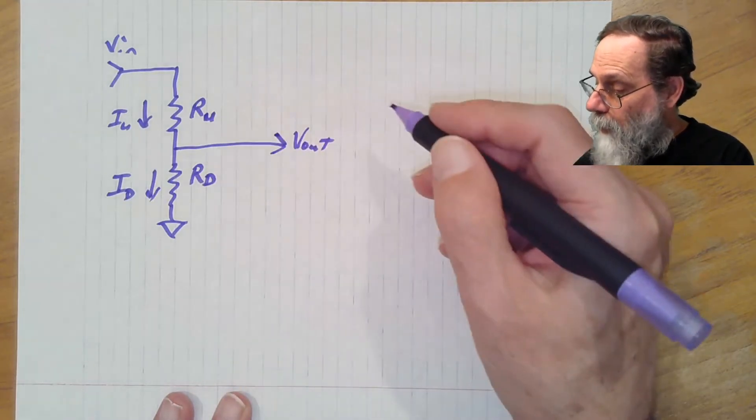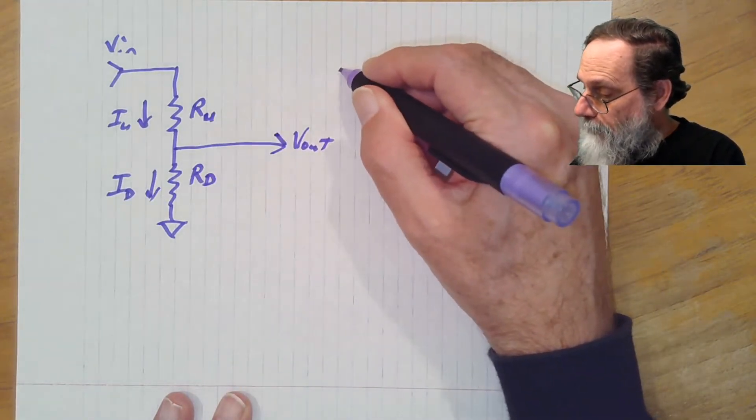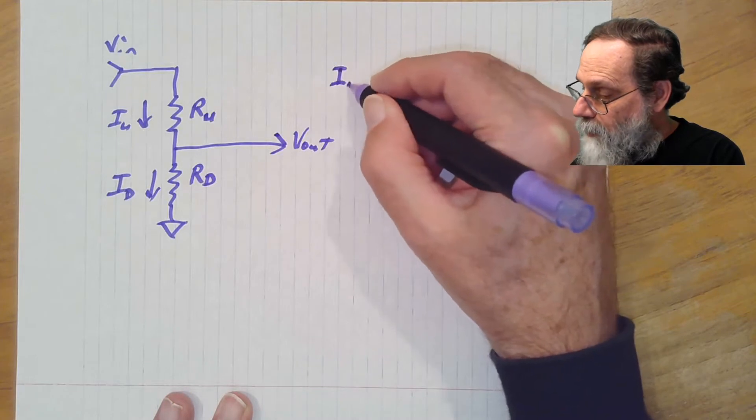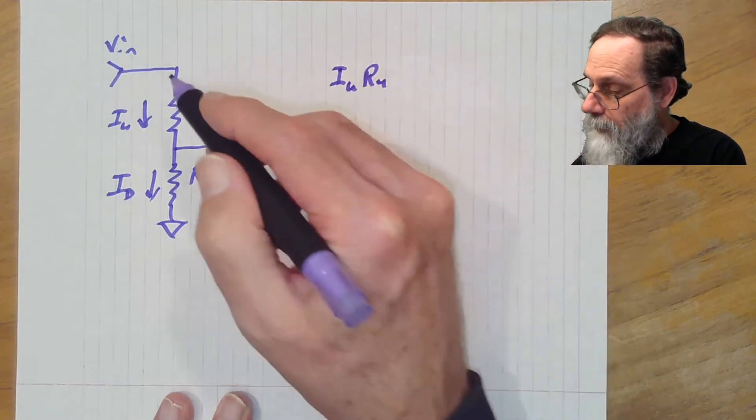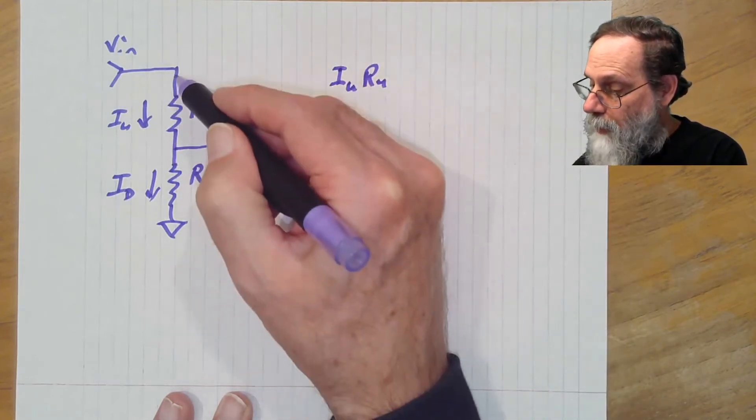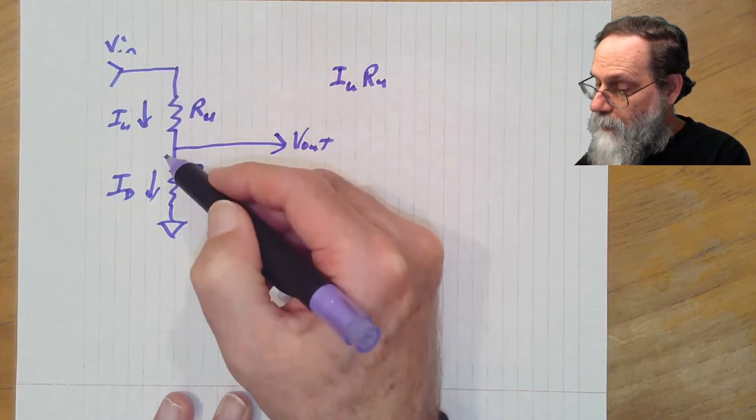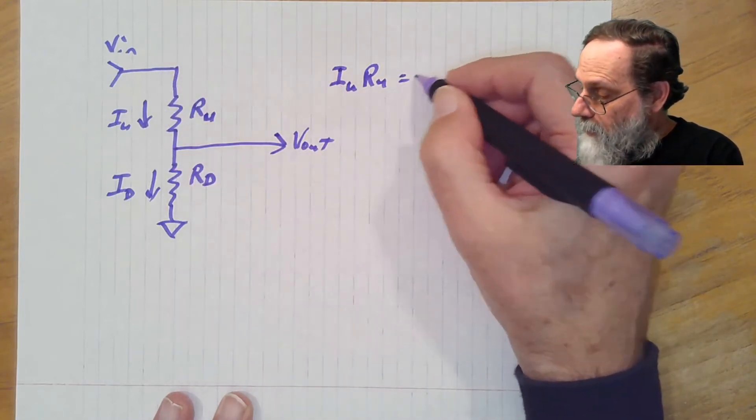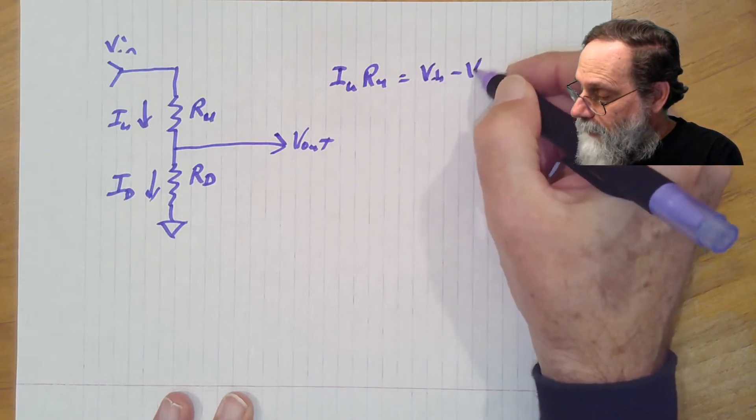We can use Ohm's law to say that Iu times Ru, that's going to be the voltage across this resistor in the direction of the arrow, so that's Vin minus Vout.